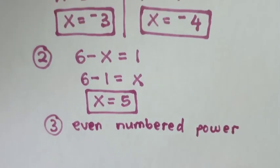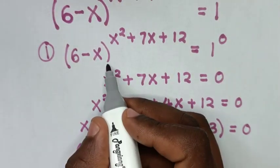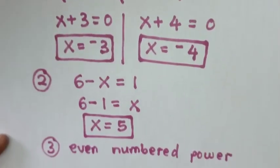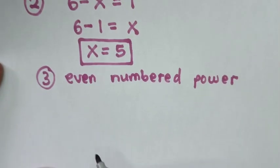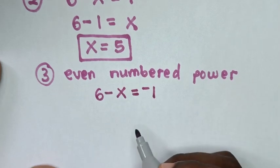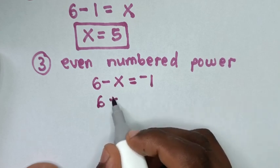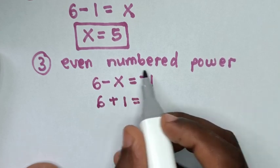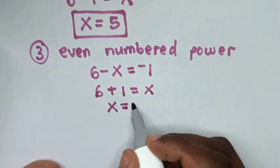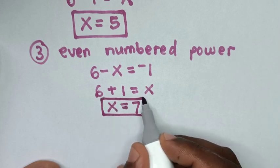Now in the third step, back into our problem. For this (6 minus x), it should be negative 1. So our equation will be 6 minus x is equal to negative 1. Then it will be 6 plus 1 equals x, so x is equal to 7. So this is the fourth value of x in this problem.